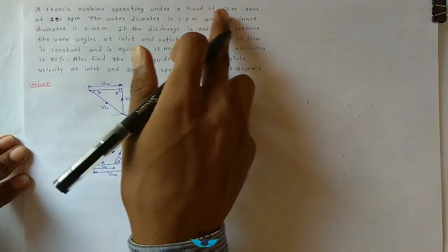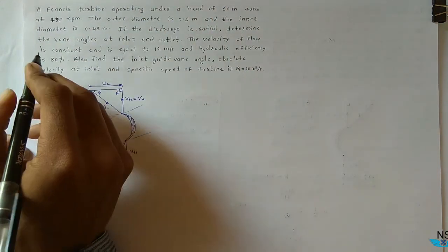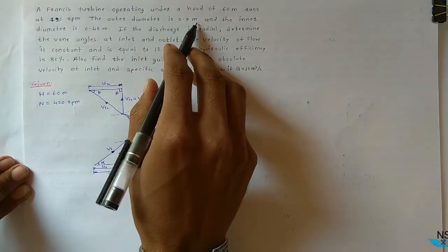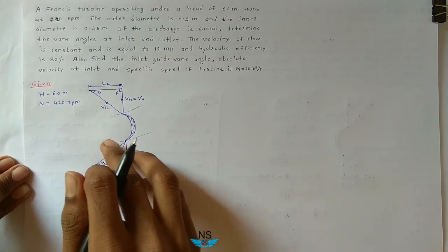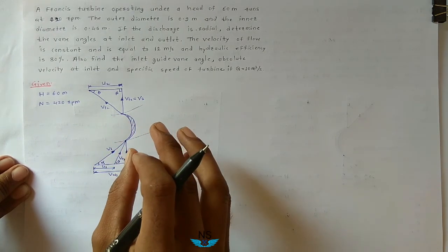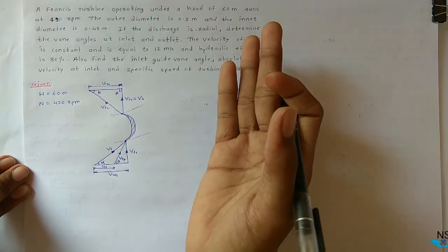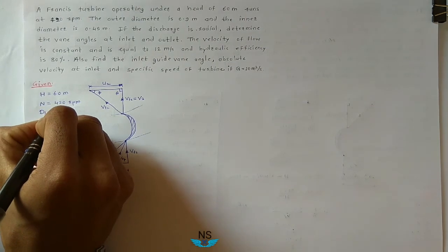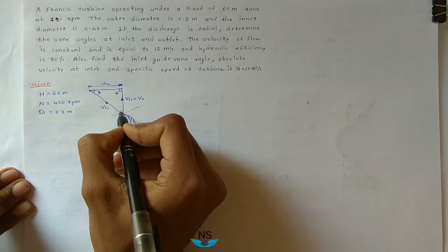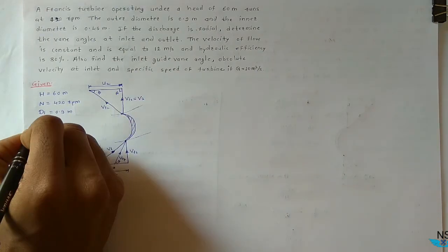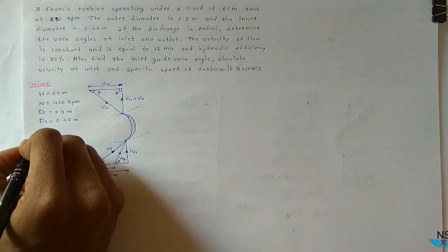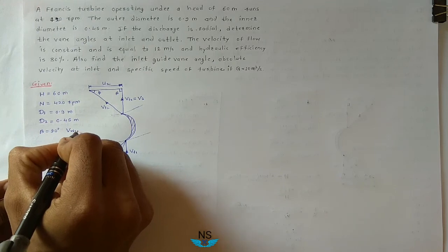Given: head H equals 60 meters, speed N equals 420 rpm. The outer diameter is 0.9 m — the outer diameter means the diameter at inlet, because this is the outer side of the turbine runner. So D1 equals 0.9 m. The inner diameter is 0.45 m, which is the inner side of the runner, meaning the outlet of the runner. So D2 equals 0.45 m. The discharge is radial, so beta equals 90 degrees, which means Vw2 equals zero.